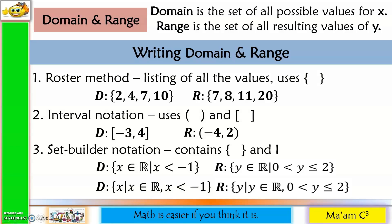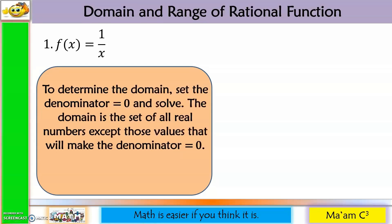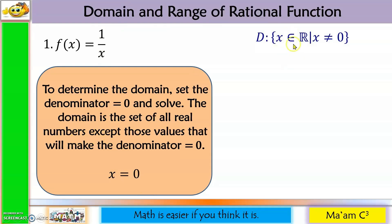In rational functions, interval notation and set builder notation are commonly used. For f(x) = 1/x, to determine the domain, set the denominator equal to 0 and solve. The domain is the set of all real numbers except those values that make the denominator equal to 0. Setting x = 0, we see 0 is the excluded value. In set builder form: x ∈ ℝ such that x ≠ 0. In interval notation: (−∞, 0) ∪ (0, +∞).